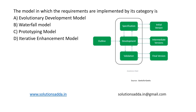This is a question from software engineering. The model in which requirements are implemented by its category is: Evolutionary Development Model, Waterfall Model, Prototype Model, or Iterative Enhancement Model.